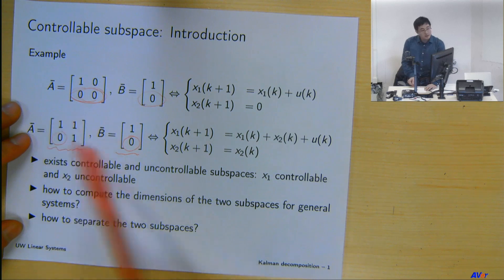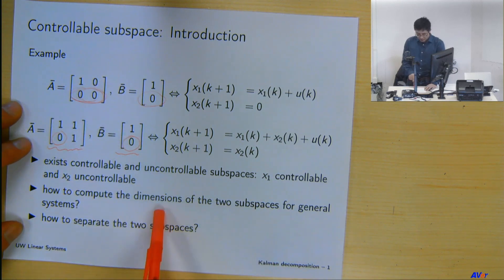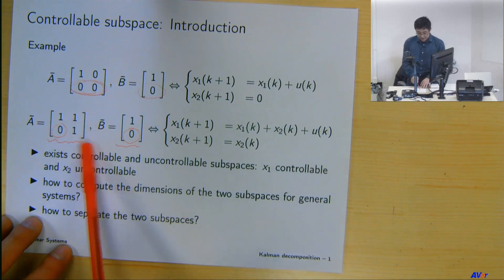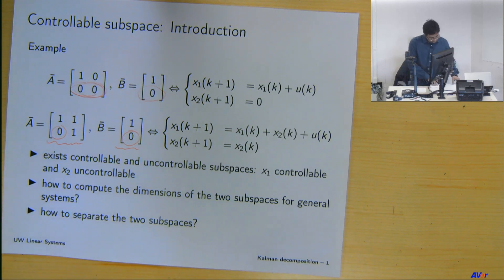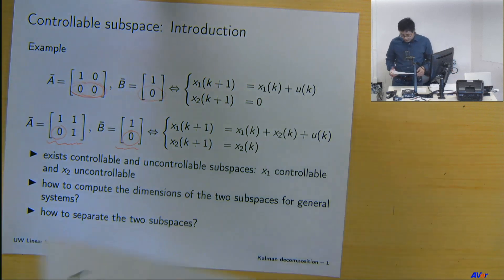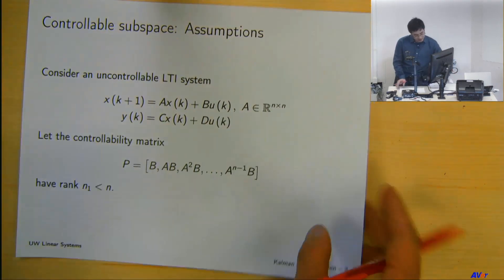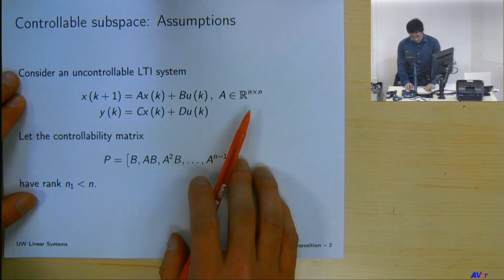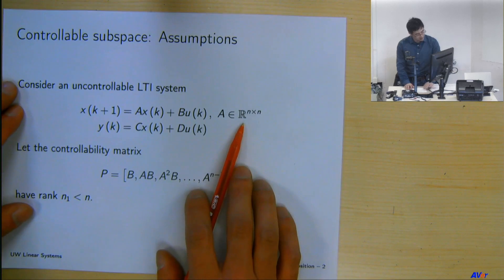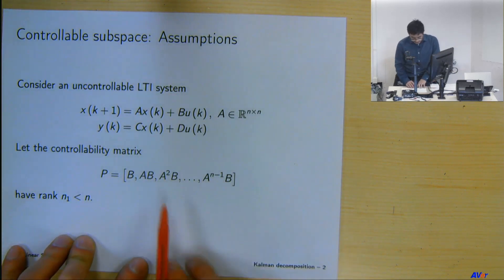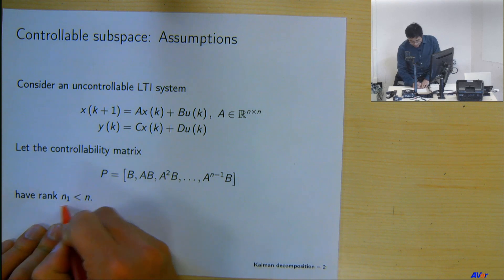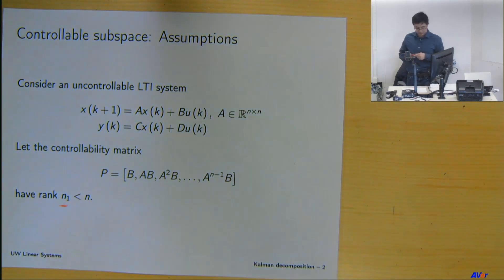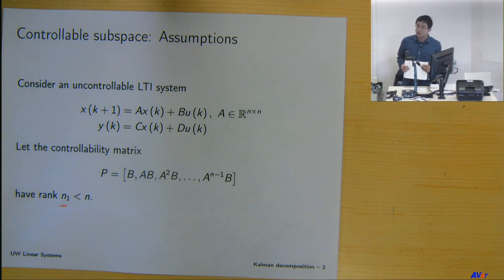So we're going to go from these examples to the general case. How can we compute — first, how can we decide how big these subspaces are, what are the dimensions, and how to separate these subspaces? Let's make some regular assumptions. For the general case, we're considering an n-dimensional system with an n-by-n A matrix. Because it's uncontrollable, let's say the controllability matrix has rank n1, which is less than n.